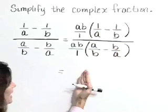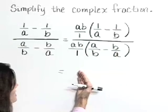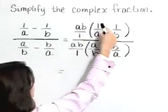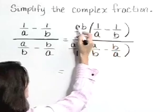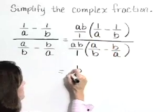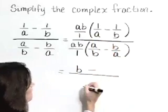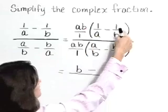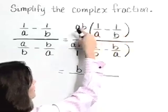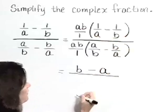Now let's multiply. I'm going to cancel common factors as I do that. AB times 1 over A. The A's cancel, leaving B. Minus sign. AB times this 1 over B. The B's cancel, leaving A.